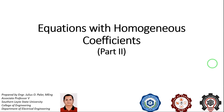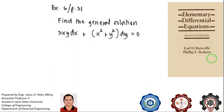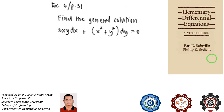This is the solution to equations with homogeneous coefficients. Our first example on this topic is exercise 6, page 31 of our book. We are asked to find the general solution to the differential equation 3xy dx plus the quantity x squared plus y squared dy equal to 0.